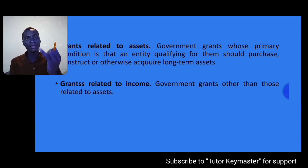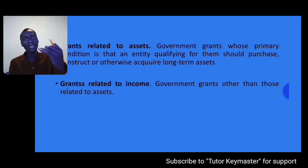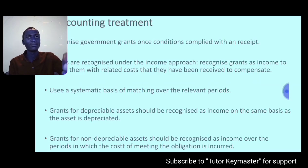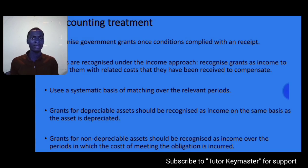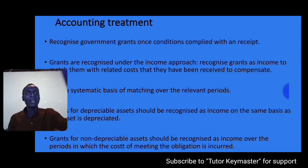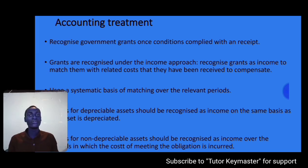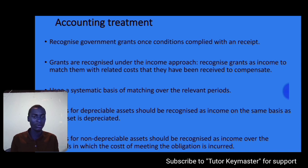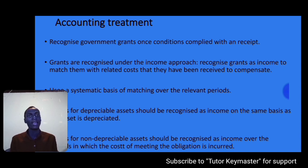To summarize, you should know the three different forms of government grants: grants related to assets, grants related to income, and non-monetary government grants. Now we need to look at the accounting treatment of government grants.